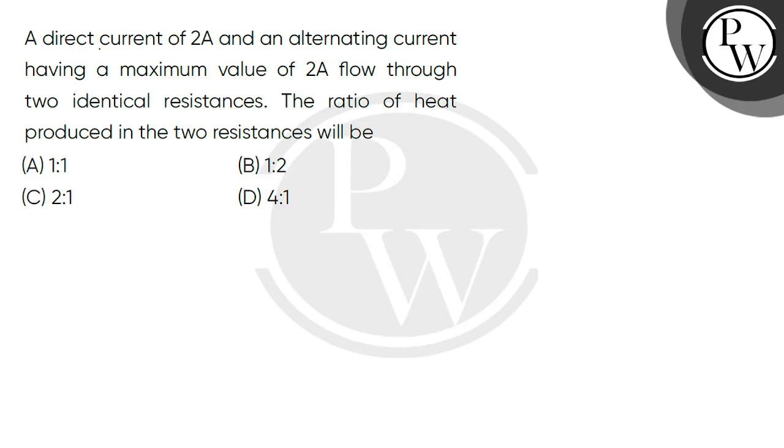Hello children, let's read the question. A direct current of 2 ampere and an alternating current having a maximum value of 2 ampere flow through two identical resistances.